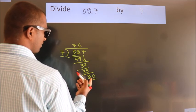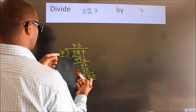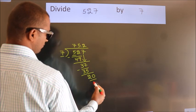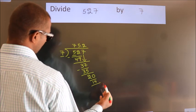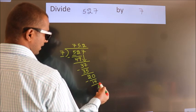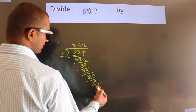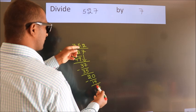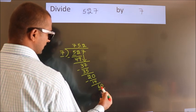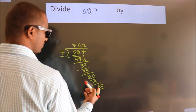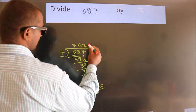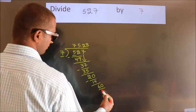A number close to 20 in the 7 table is 7 twos — 14. Now we subtract. We get 6. After this, we already have the decimal, so directly take 0 — so we have 60. A number close to 60 in the 7 table is 7 eights — 56.